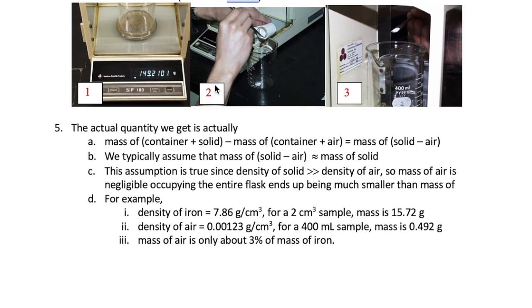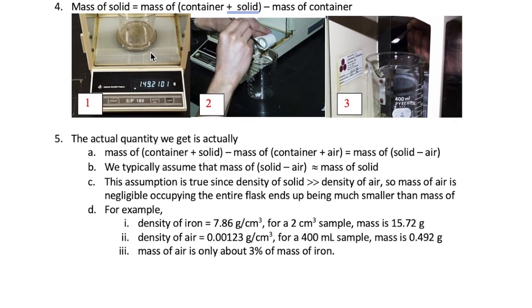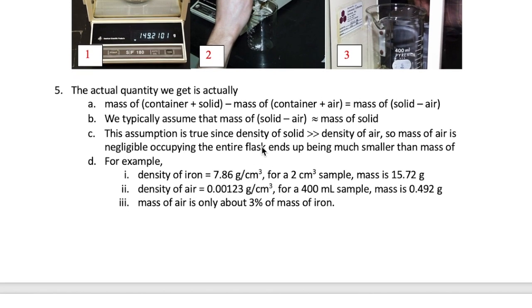Now, if you think about it, the quantity we calculate when we subtract the two masses is not exactly equal to just the mass of solid. The reason is because when we weigh just the container, it actually contains air. So when we subtract the two masses, what we get is really the mass of solid minus the air in the container. Now, we assume that this mass is equal to the mass of solid. In other words, that the mass of air in the container is zero. This assumption is reasonable because the density of solid is much higher than the density of air, which means that the mass of solid in the container will be much, much larger than the mass of air in the container.